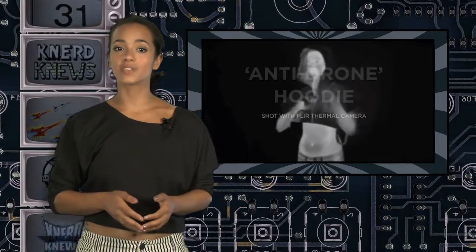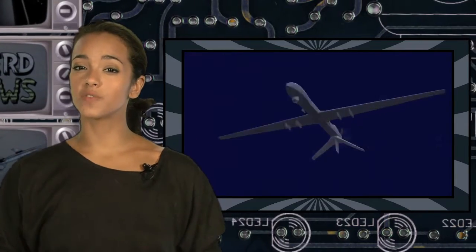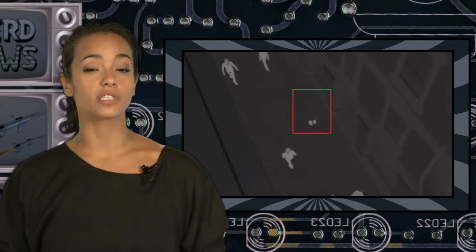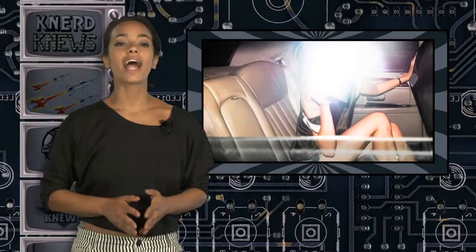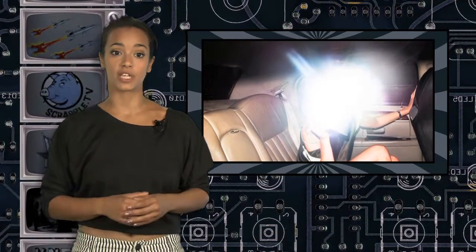His work includes hoodies and cloaks that use reflective metallic fabric that he has repurposed to reduce a person's thermal footprint. In theory, this limits one's visibility to aerial surveillance vehicles employing heat imaging cameras. Adam also developed a purse with extra bright LEDs that can be activated when someone is taking unwanted pictures.